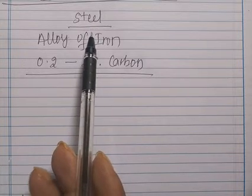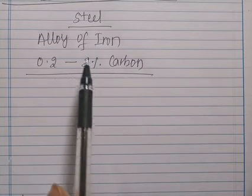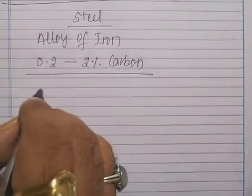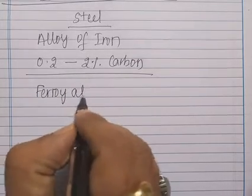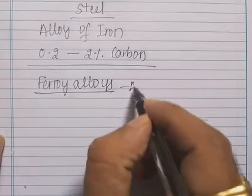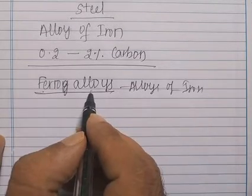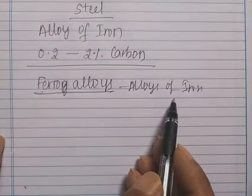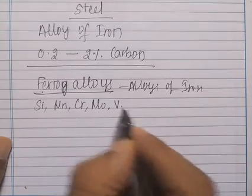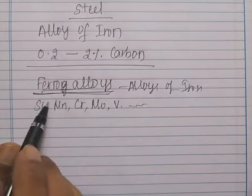Stainless steel is an alloy of steel prepared by adding different kinds of other elements. The elements added to steel are called ferro alloys. Ferro alloys are alloys of iron — the name 'ferro' means iron — and they contain silicon, manganese, chromium, molybdenum, vanadium, etc.